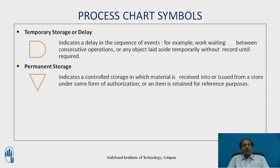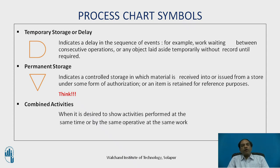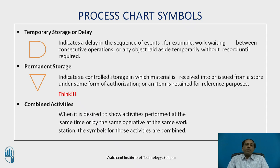There can also be combined activities — for example, when an operation is going on along with an inspection simultaneously. When it is desired to show activities performed at the same time or by the same operator at the same workstation, the symbols for those activities are combined. For instance, if an operator is doing an operation and inspecting at the same time, the symbol is a circle drawn inside a square. You can have combinations of various symbols depending on the combination of activities.